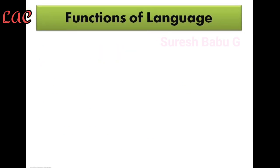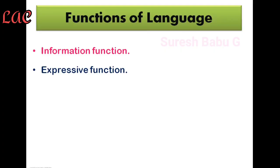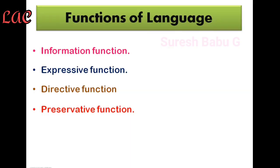Now, the functions of language. The main function is the information function — in order to give information about anything, you need to know language and use it properly. For example, if you are going to a different country, you have to know what is happening there, and in order to know that you have to learn the language. Next is the expressive function — in order to express things properly. Then the directive function — to direct things, we need language.